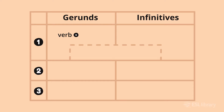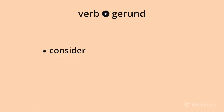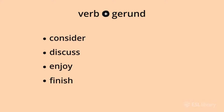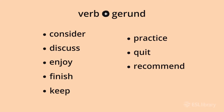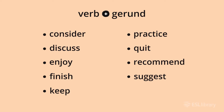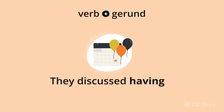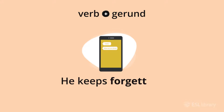Some verbs are always followed by a gerund. Common verbs followed by a gerund are consider, discuss, enjoy, finish, keep, practice, quit, recommend, and suggest. For example, 'they discussed having a party this weekend.' and 'He keeps forgetting to text me.'